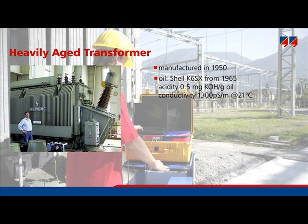Aging byproducts such as acids increase the losses and therefore the conductivity of the oil. However, on this transformer, the degree of polymerization was about 600 to 700, which means that mechanically the insulation was still in moderately good condition.